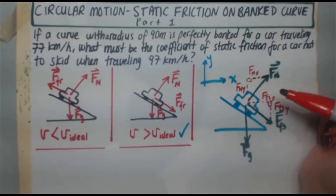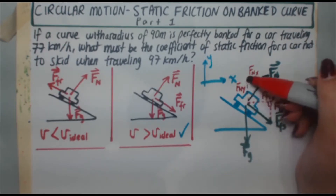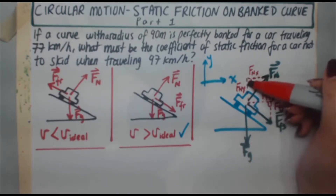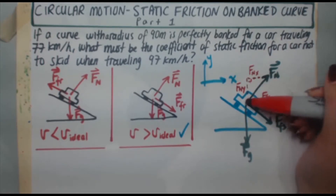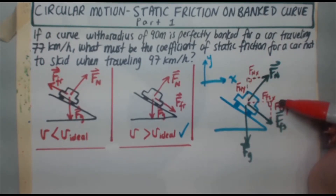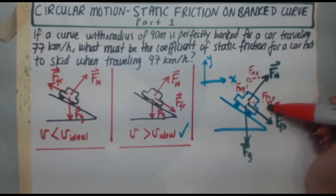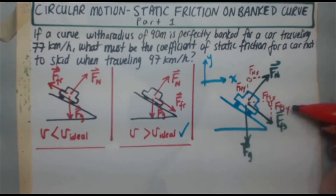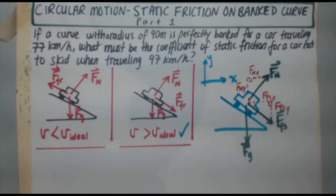For directions: FNy is going up, FNx is going right — both positive. For friction, Ffs_x is in the positive x direction, but Ffs_y is going down, so it's in the negative y direction.